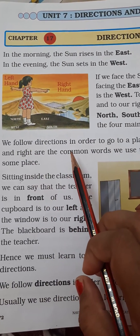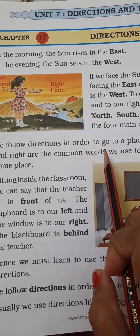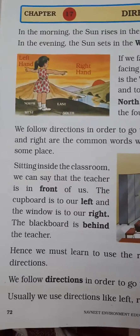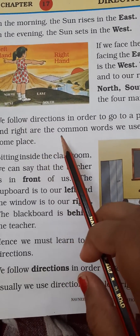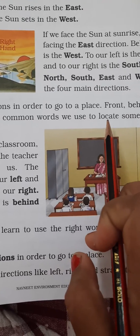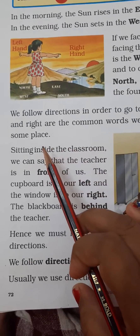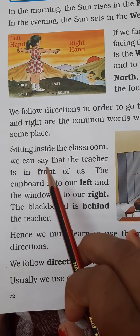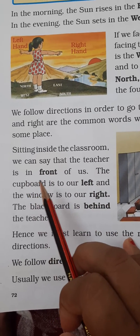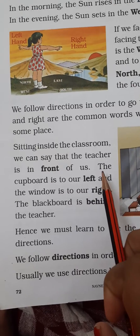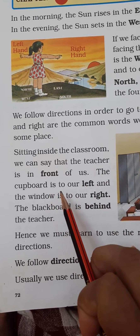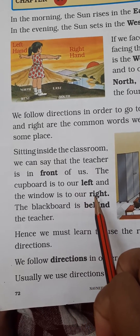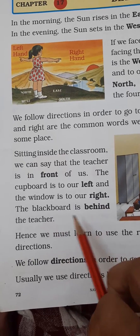We follow directions in order to go to a place. Front, behind, left and right are the common words we use to locate something or some place. Sitting inside the classroom, we can say that the teacher is in front of us, the cupboard is to our left, the window is to our right, and the blackboard is behind the teacher.